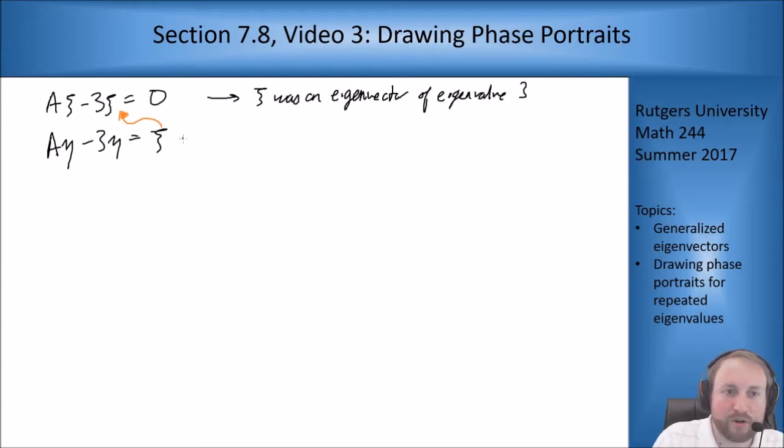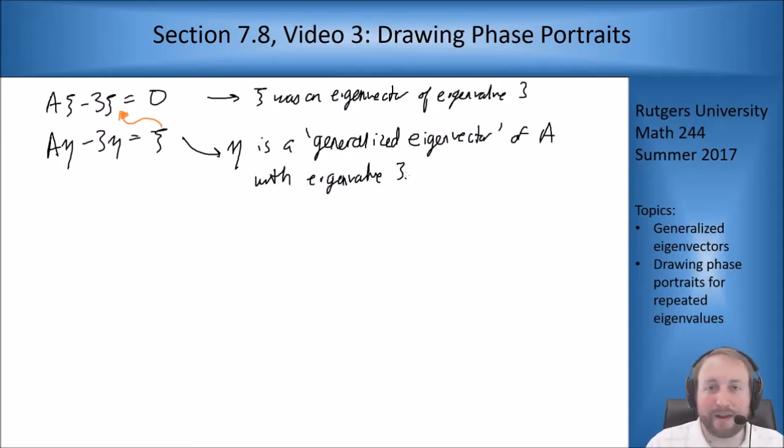The term used for these guys is that η is a generalized eigenvector of A with eigenvalue 3. You don't need to know very much about that at all, but they'll use it in the book when they're talking about this stuff.